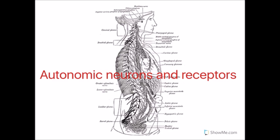Hello guys and welcome to another video. We're going to discuss today the different types of neurons and receptors located in the autonomic nervous system.